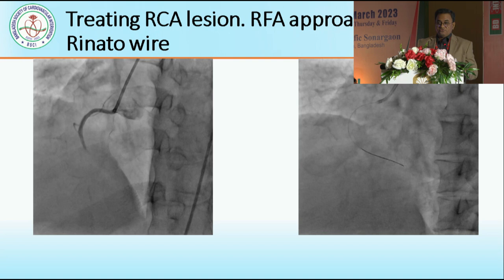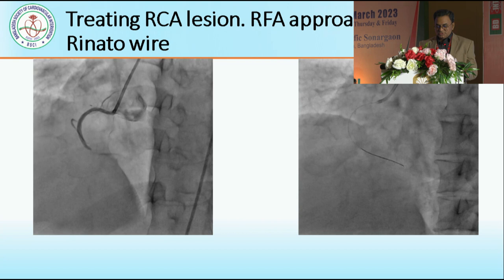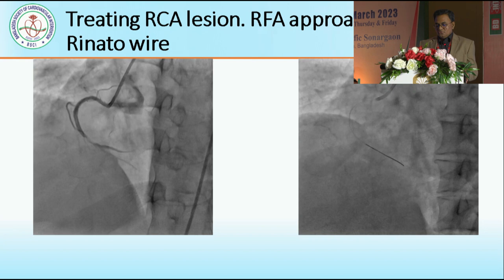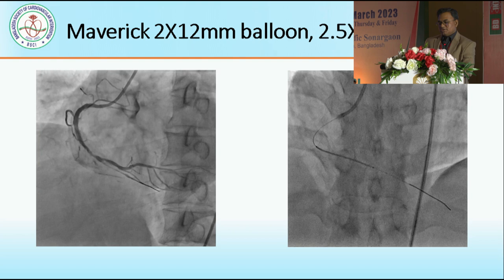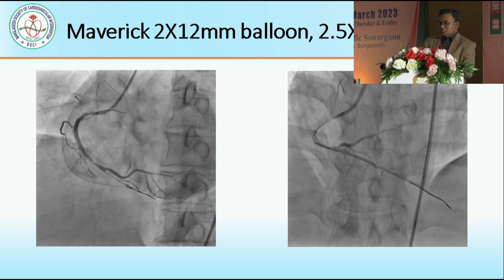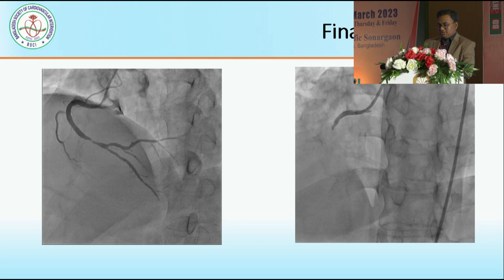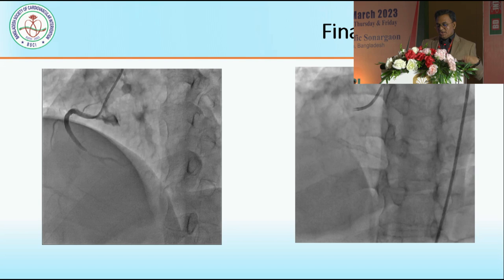As Dr. Shamswarwar, sir, described as a first step — a straightforward case of revascularization — there is no difference with his explanation and discussion. We just wired, and in this step we had to go for femoral access with Judkins right catheter, 6 French, and do cannulation in the RCA with Renato wire negotiation. Pre-dilation was done by 2 x 12 mm balloon and a 2.5 x 38 mm drug-eluting stent was placed in the RCA. Post-dilation of the RCA lesion was done by 3 x 15 mm balloon. This is the final view of the RCA — we completed the RCA lesion.